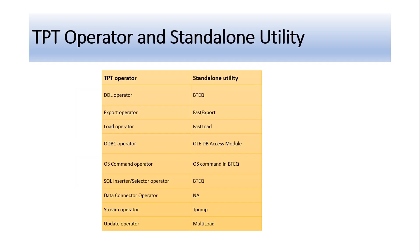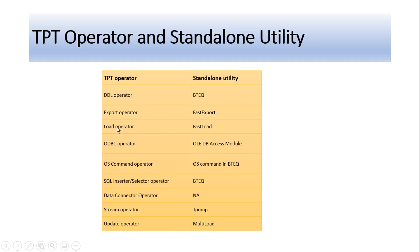Now let's look at some TPT operators and their equivalent standalone utilities. If you want to do FastLoad in TPT, you use the Load operator. For FastExport in TPT, you use the Export operator. To read data from a file you use the DataConnector operator. For MultiLoad you use the Update operator. This mapping table is very important to understand before using TPT. Next I'm going to show you an example TPT script where I will use the Load operator to do a FastLoad into an empty target table.